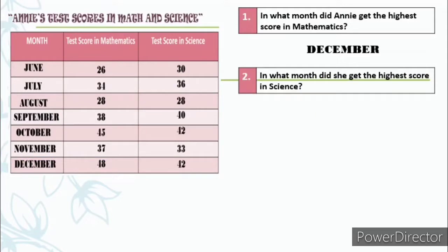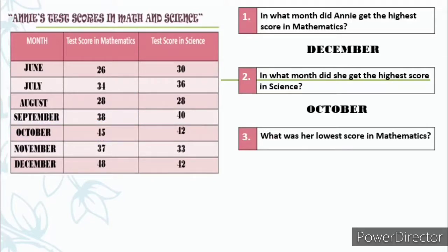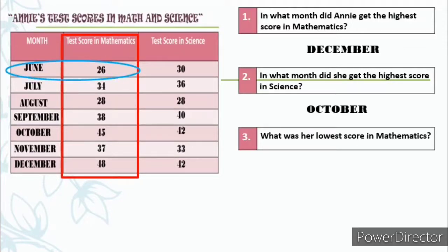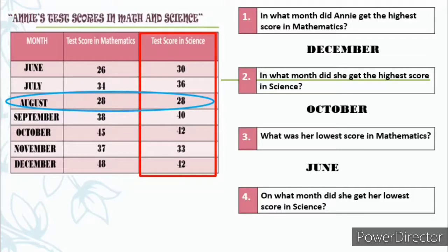Number 2: In what month did she get the highest score in science? Let's observe the scores in science and look for the highest. Very good — it's October. She got 42 points. Number 3: What was her lowest score in mathematics? Let us observe the test scores in mathematics. We are looking for the lowest score. Very good — it's June. She got only 26 points. Number 4: On what month did she get her lowest score in science? Observing the test scores in science, we are looking for the lowest score. Excellent — it's August. She got only 28 points.